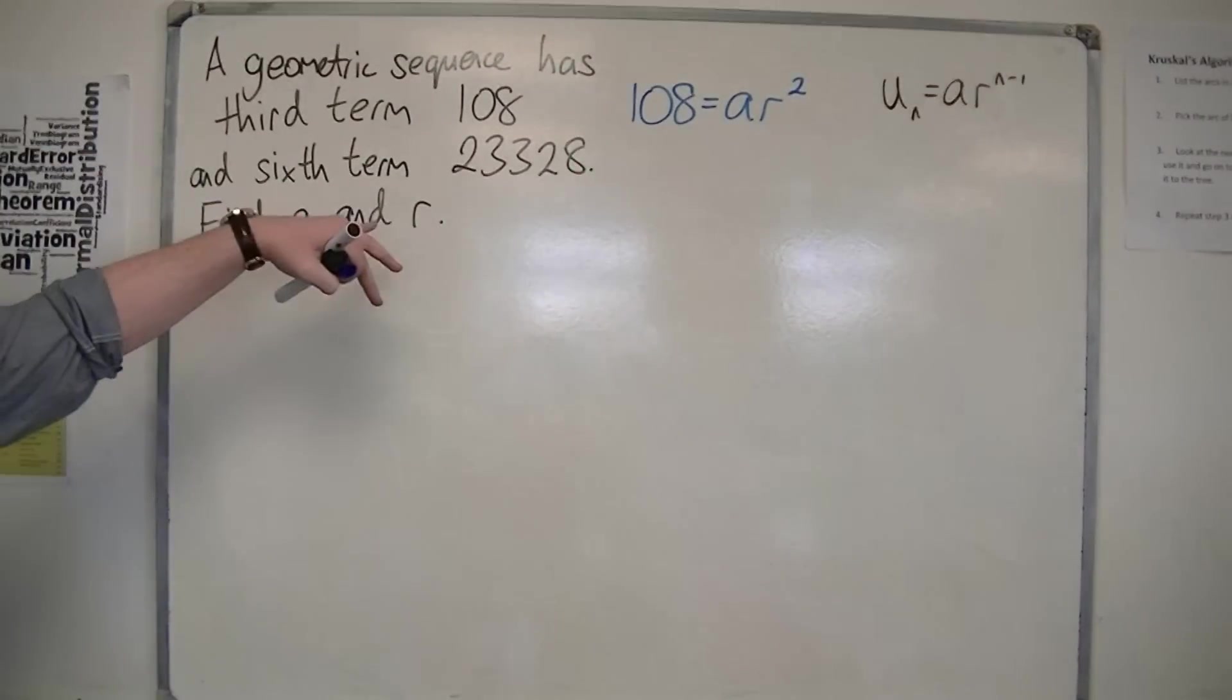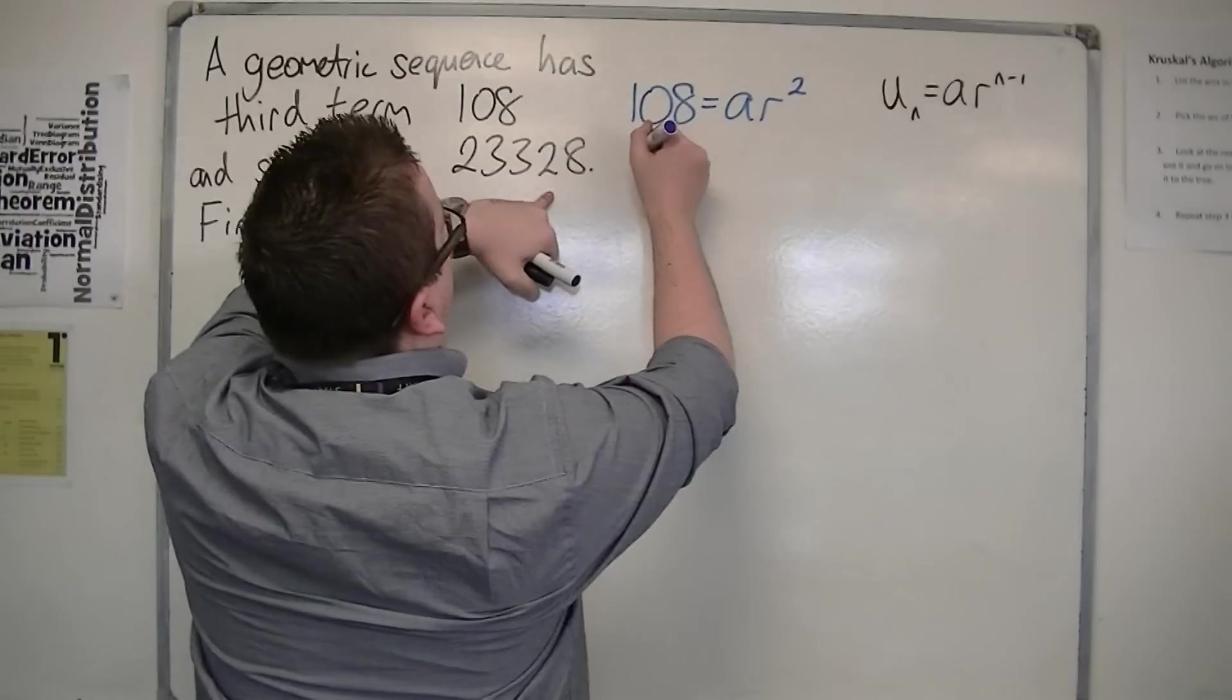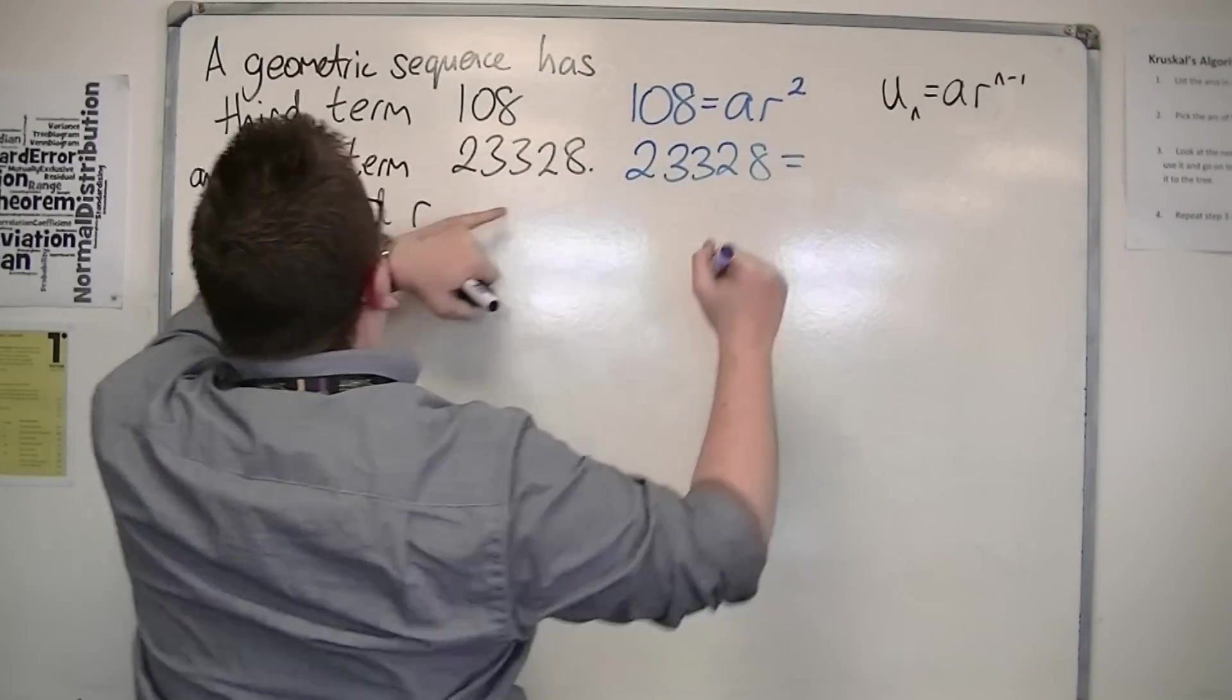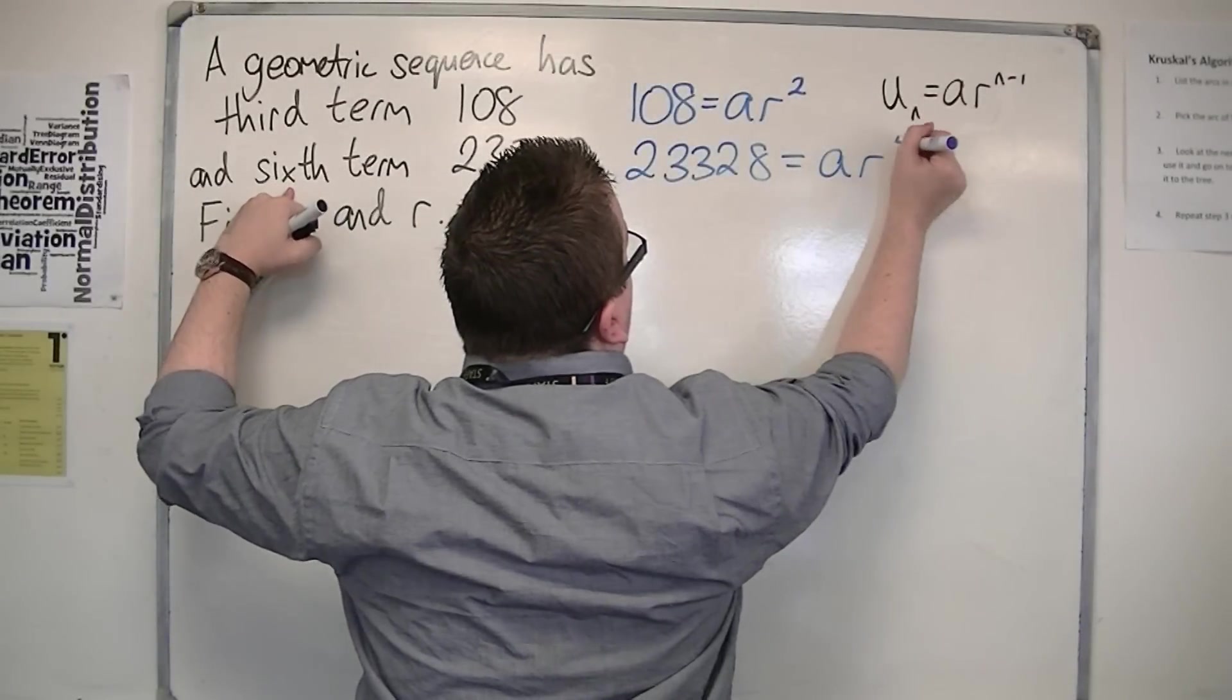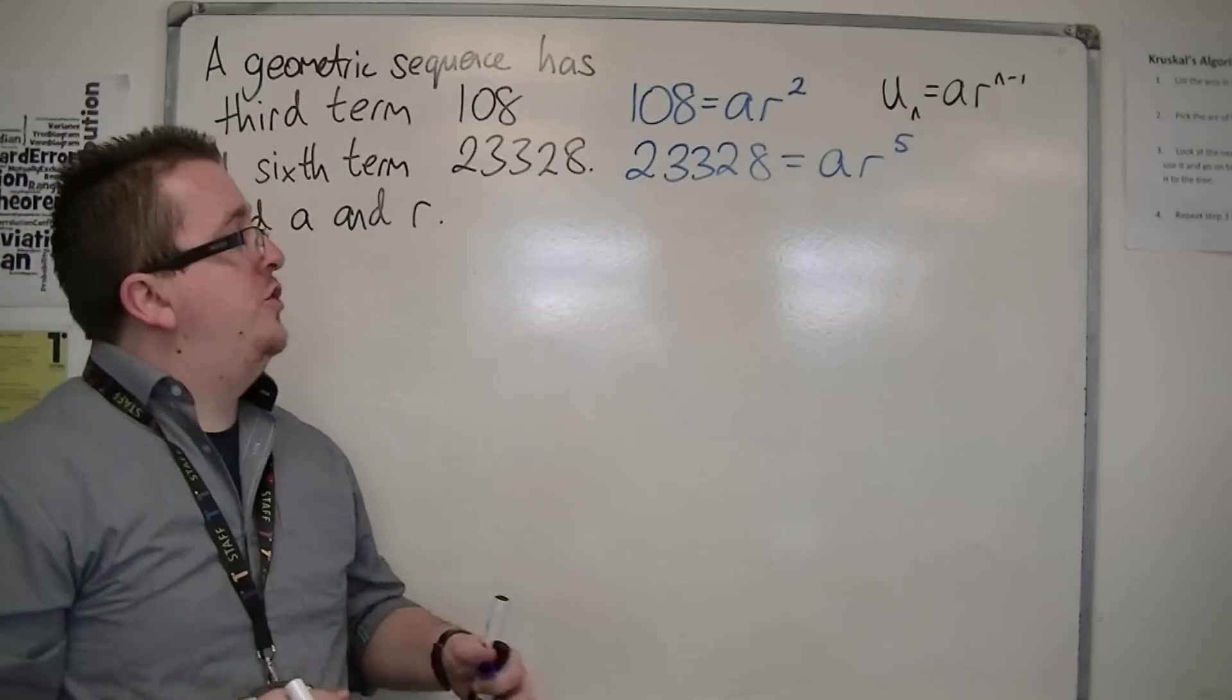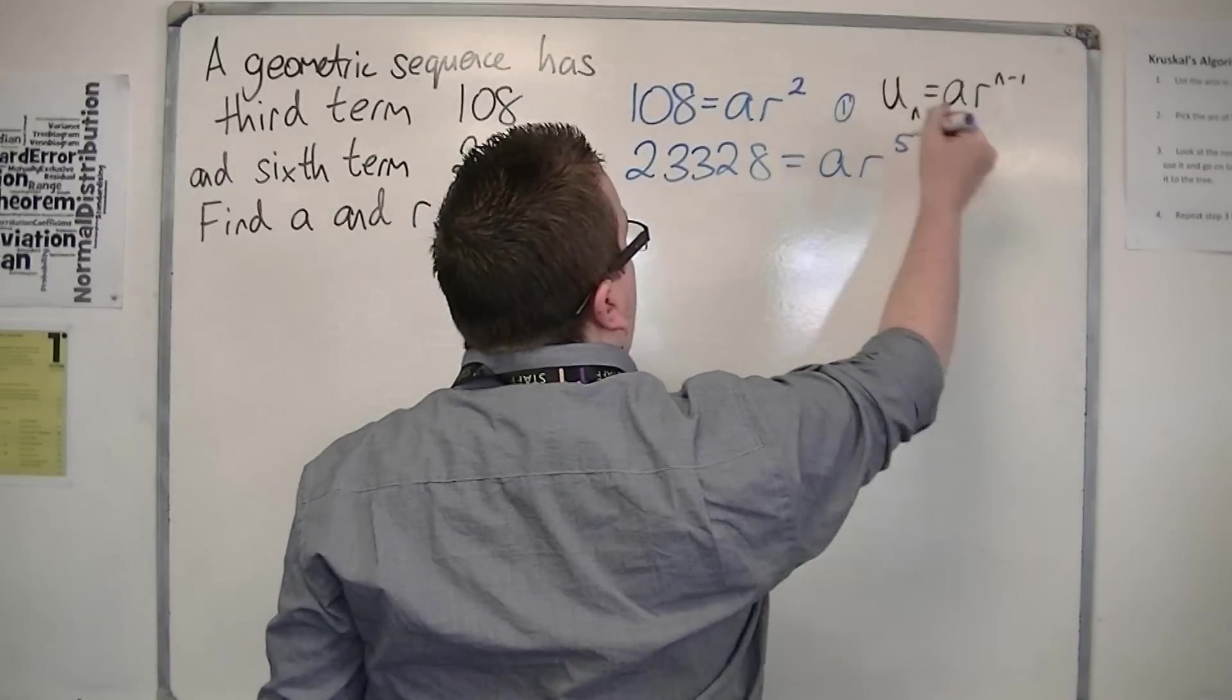If the sixth term is 23,328, then that means 23,328 equals, well n is now 6, so AR^(6-1), which is AR^5. So these are the two equations we're going to be working with. Let's call this equation 1 and that equation 2.